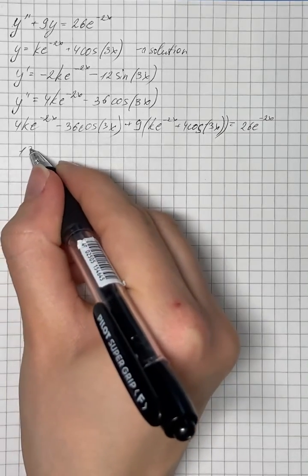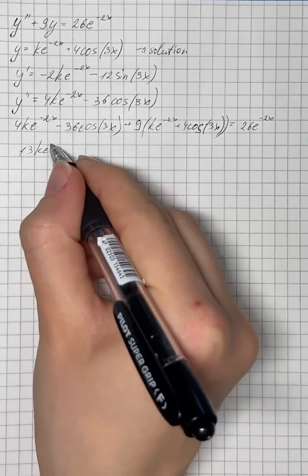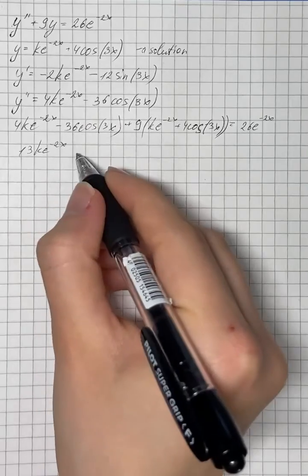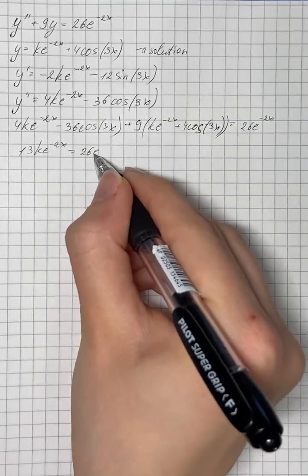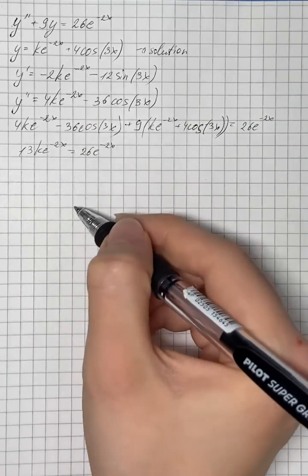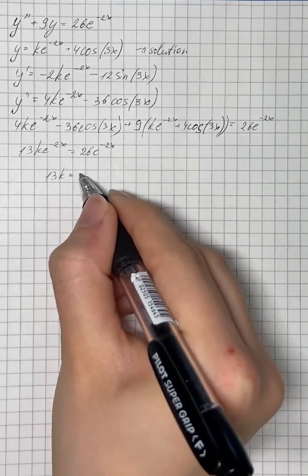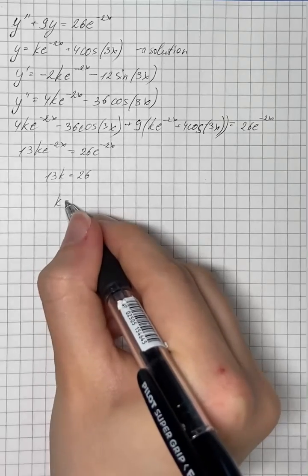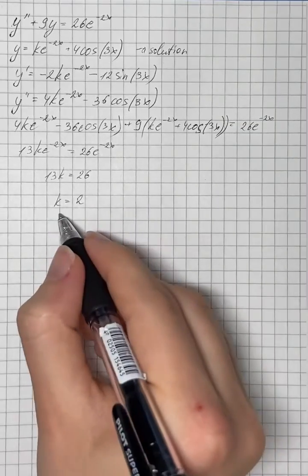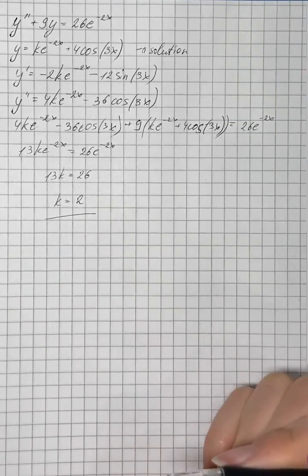Then we get 13k e to the power of negative 2x equals to 26e to the power of negative 2x. And comparing both sides we get that 13k equals 26 and therefore k equals 2. So the answer is 2.